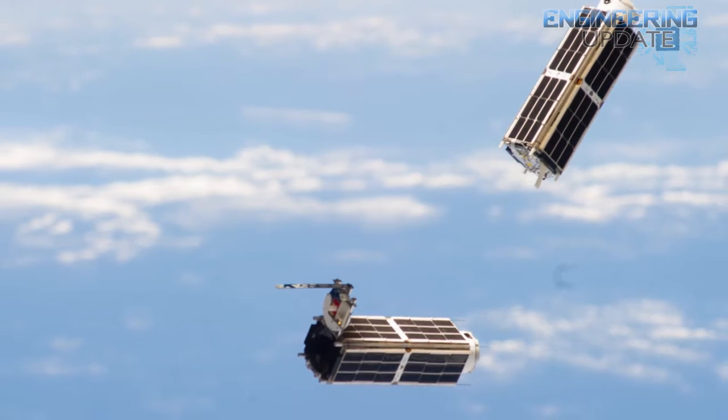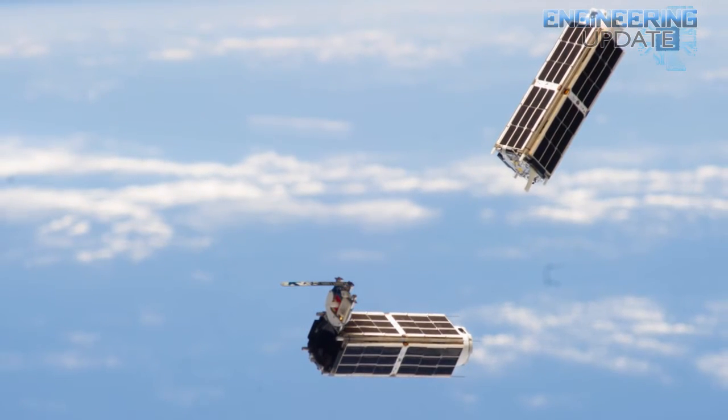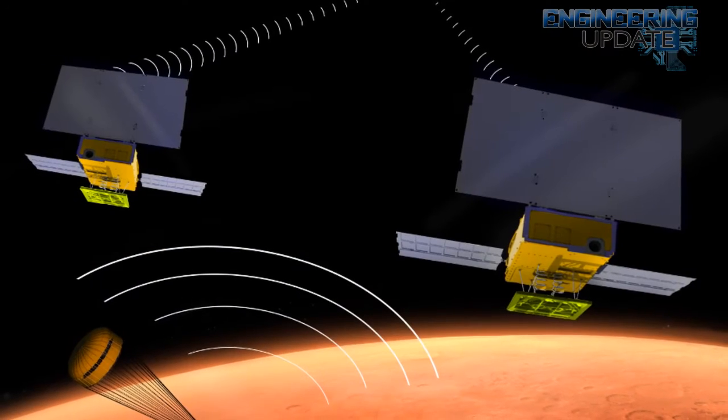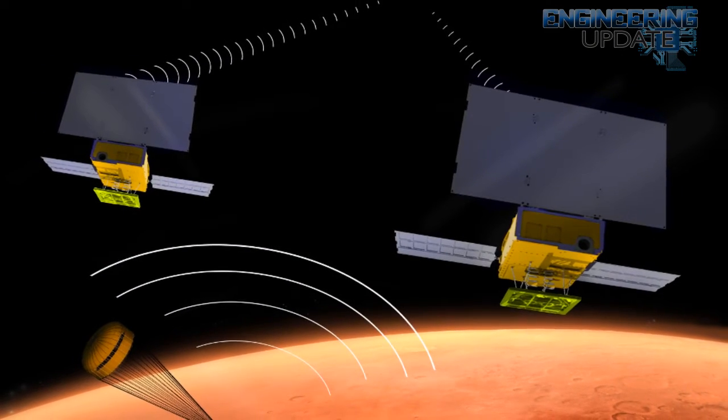These Twin Communication Relay CubeSats, being built by the Jet Propulsion Lab in Pasadena, California, are actually part of a technology demonstration called Mars Cube-1, or MARCO. They're each made up of a six-unit CubeSat design that is about 14.5 inches by 9.5 inches, roughly the same size as a briefcase when they're stowed.